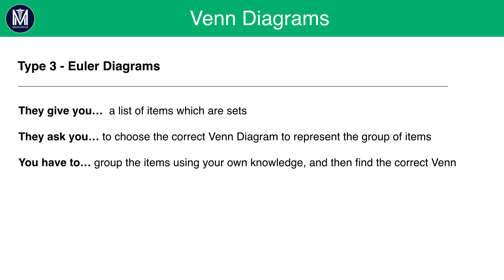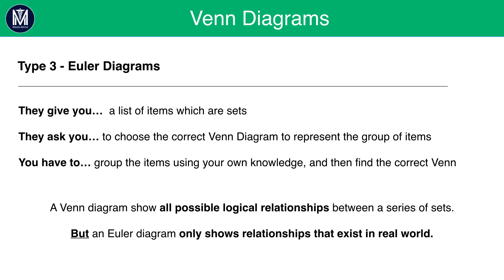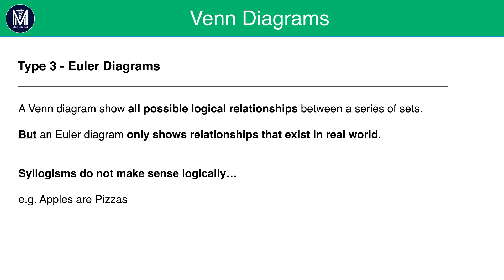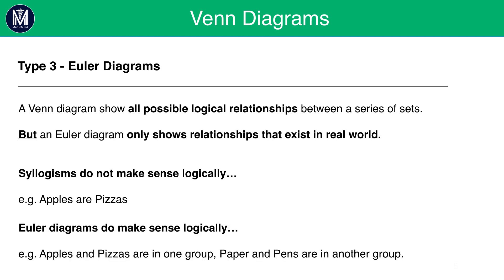You may be wondering, what's the difference between Venn Diagrams and Euler Diagrams? Well, a Venn Diagram shows all possible logical relationships between a series of sets. But a Euler Diagram only shows relationships that exist in the real world. Syllogisms don't make sense logically. Sentences like apples or pizzas, that doesn't make sense. But Euler Diagrams do make sense logically. Apples and pizzas would be in one group. Paper and pens would be in another group.